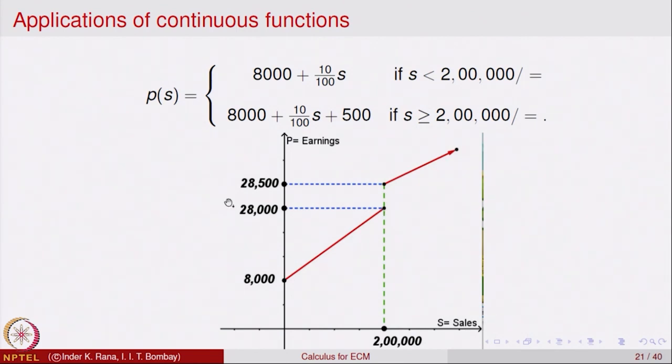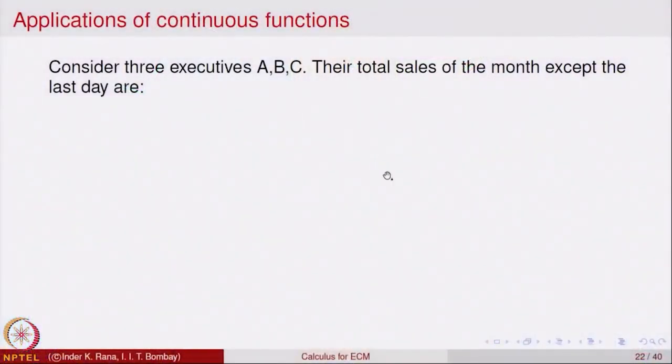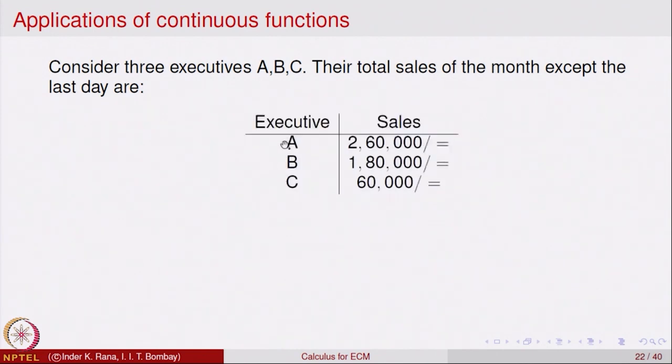Let us interpret this from the economics point of view. Consider 3 employees A, B, and C. One day before the end of the month, their sales data is: A has made sales of 2 lakh 60,000; B has made sales of 1 lakh 80,000; and C has made sales of only 60,000.